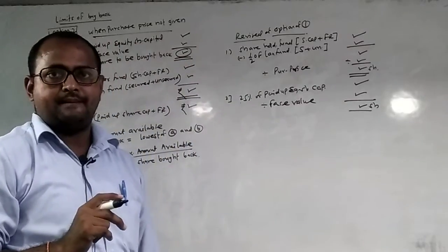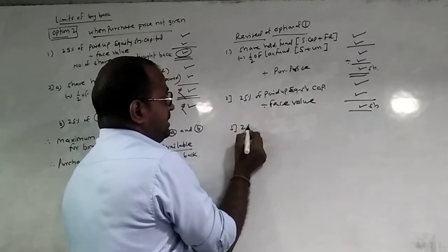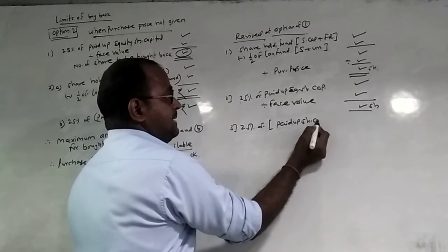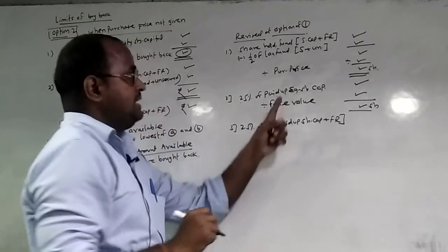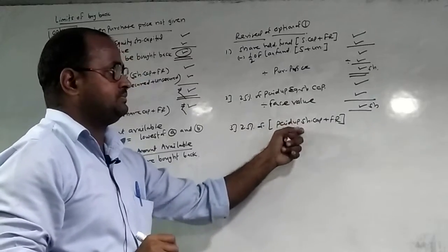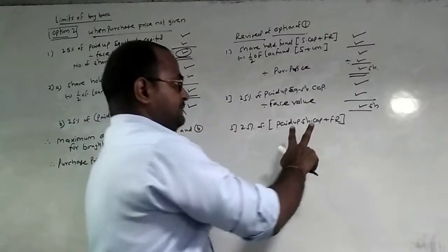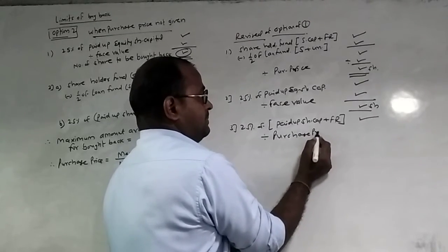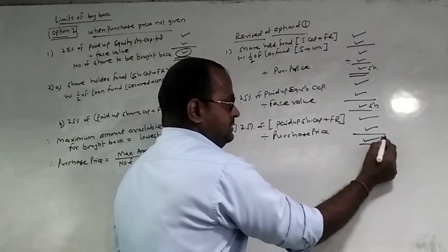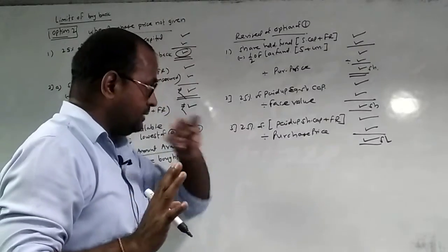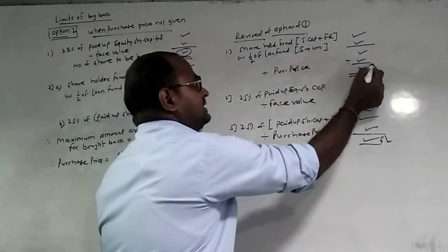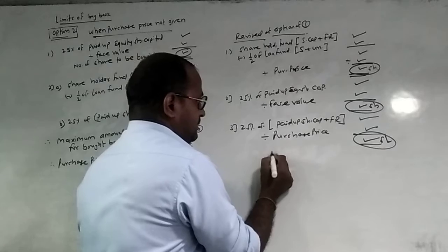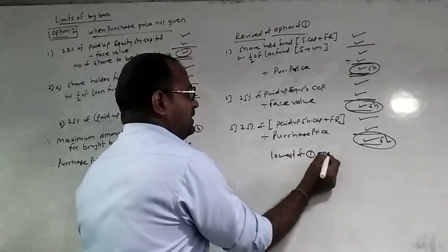Third: what is the number of shares? 25% of shares — paid-up share capital plus reserves — that is 25%, divided by the purchase price. So if you have the share capital, you need to calculate the number of shares. Then you add up the number of shares from each method.